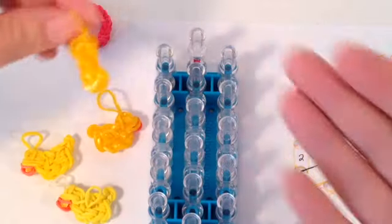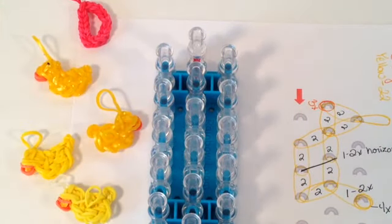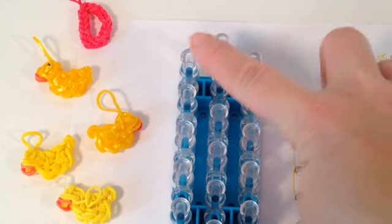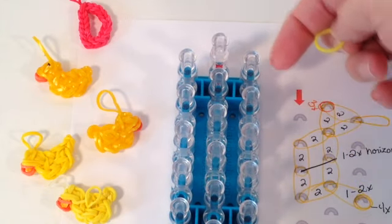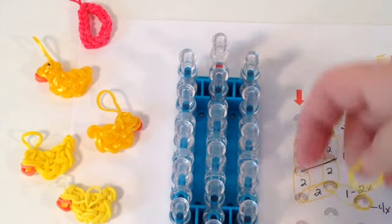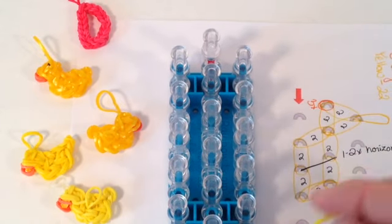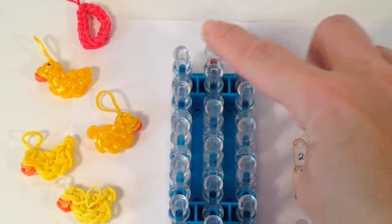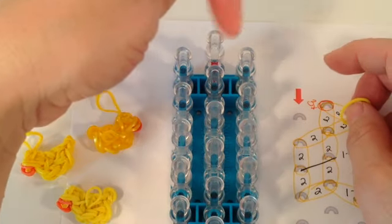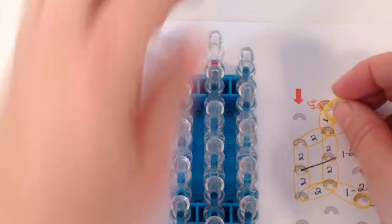We'll begin today's tutorial by placing a single band on our loom set in an offset position with our arrows pointing towards us. This is the way that I choose to do my tutorials, so please set your loom in a standard configuration and make sure your arrows are pointing towards your body.